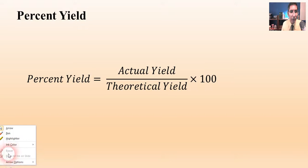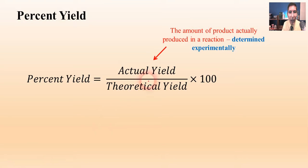Percent yield is determined by taking the actual yield and dividing it by the theoretical yield and then multiplying that by 100. The actual yield is the amount of product that we actually produce in a chemical reaction in the laboratory. It's determined experimentally. So that means we have to go into the lab and actually carry out the reaction and see how much we really make.